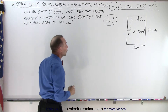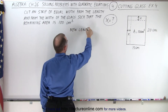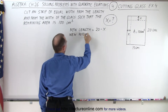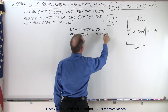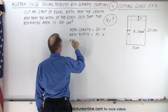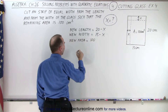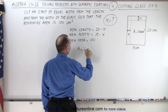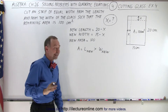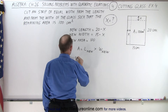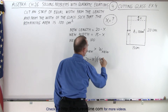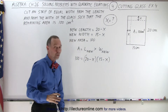The new length after we cut the piece of glass is going to be 20 minus x, and the new width of the glass is going to be 15 minus x. They told us the remaining area is going to be 100 square centimeters. The area of a rectangle is length times width, so 100 equals the new length times the new width, and we need to solve this for x.